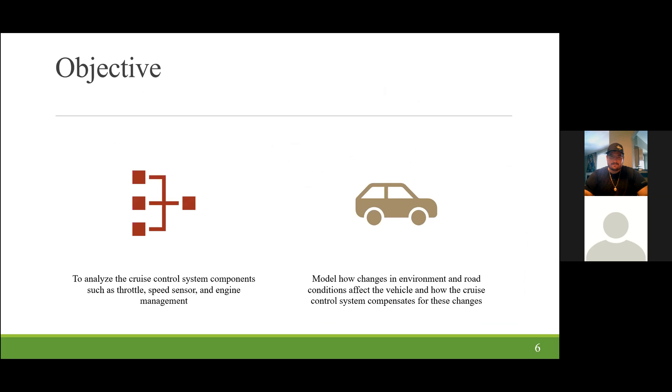Our objective for this assignment is to model the cruise control system and its components, such as a throttle speed sensor and the engine management to better understand how the equipment talks to each other. Also, we would like to analyze how changes in environment and road conditions affect the vehicle and how the cruise control system instantaneously adjusts to these changes.